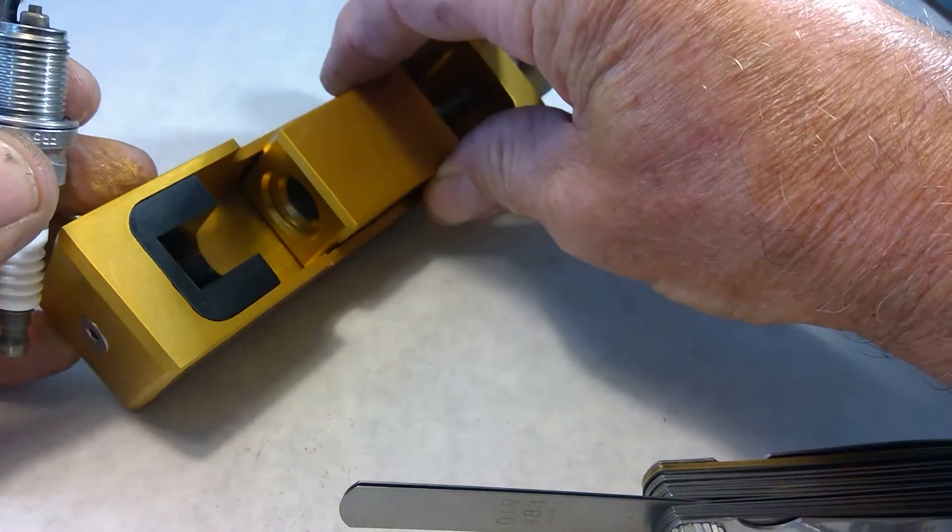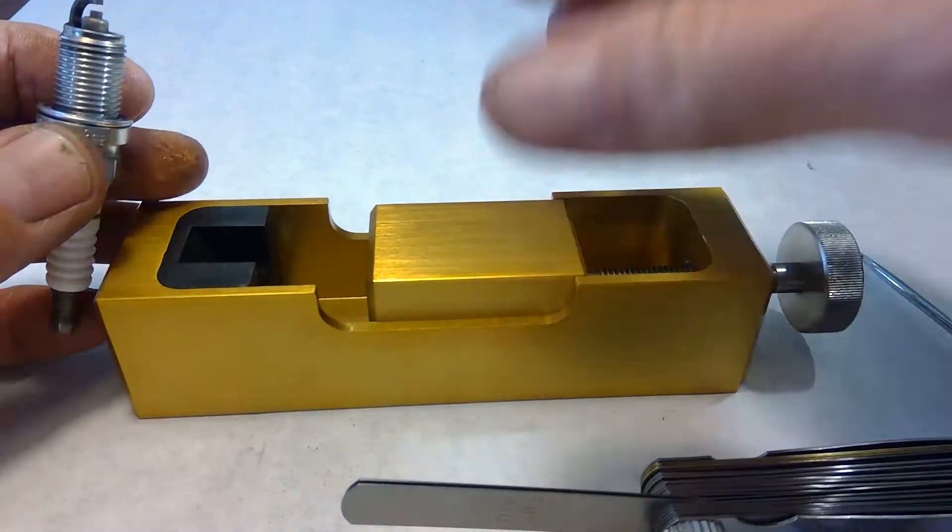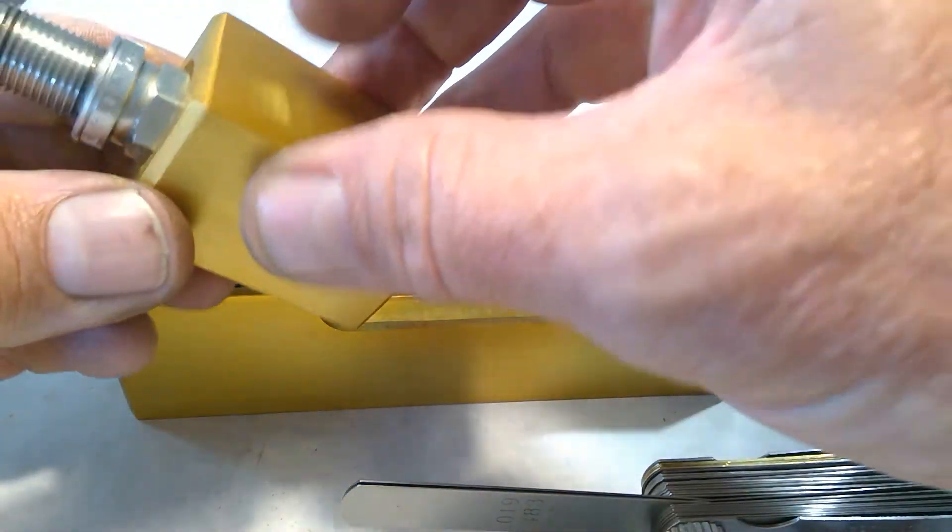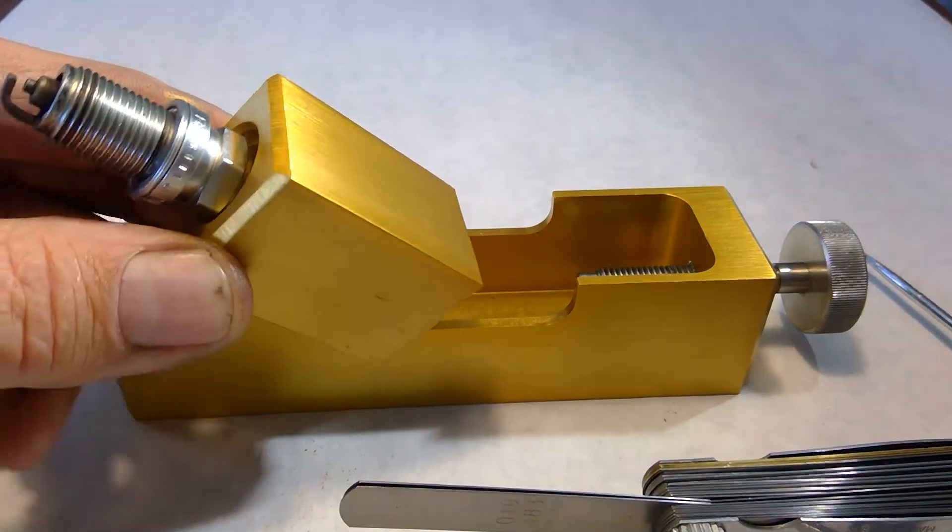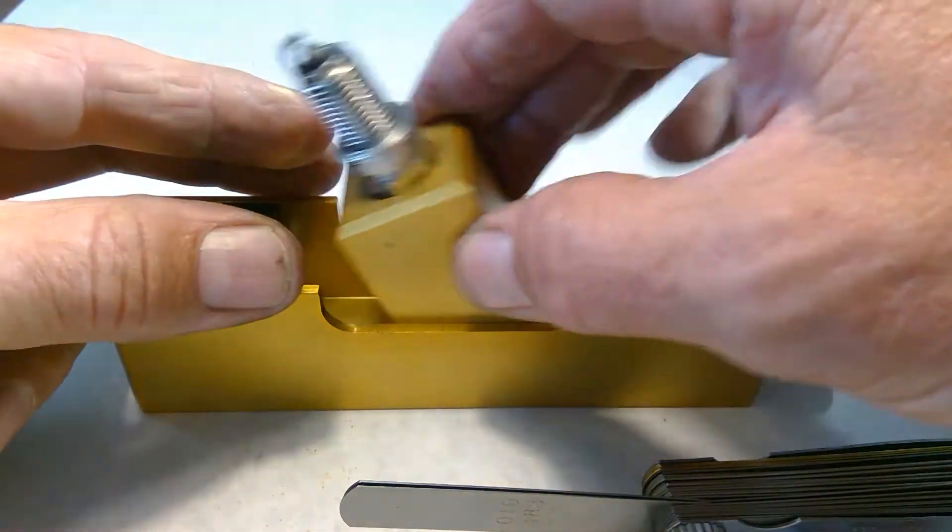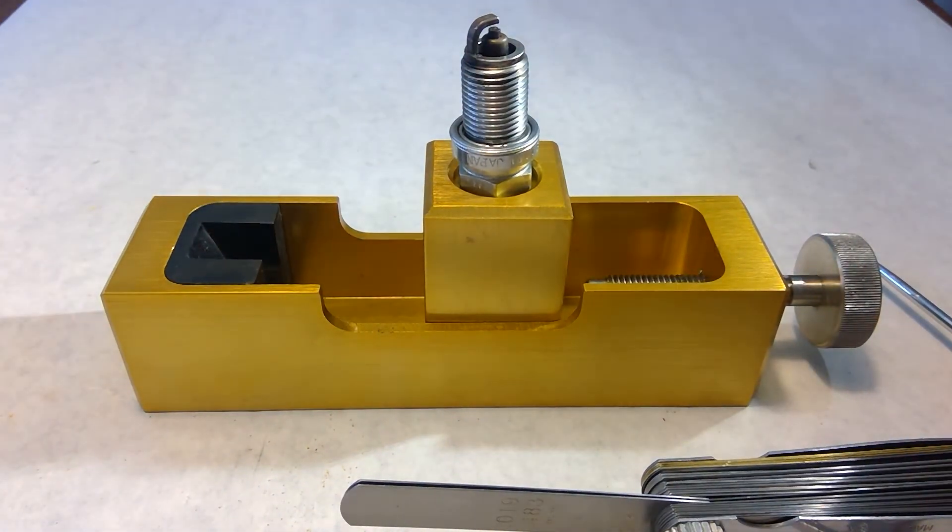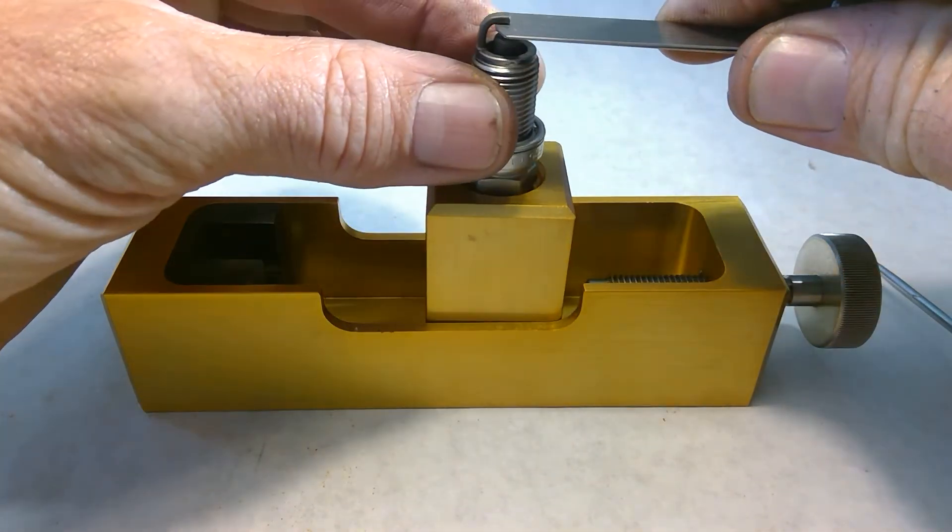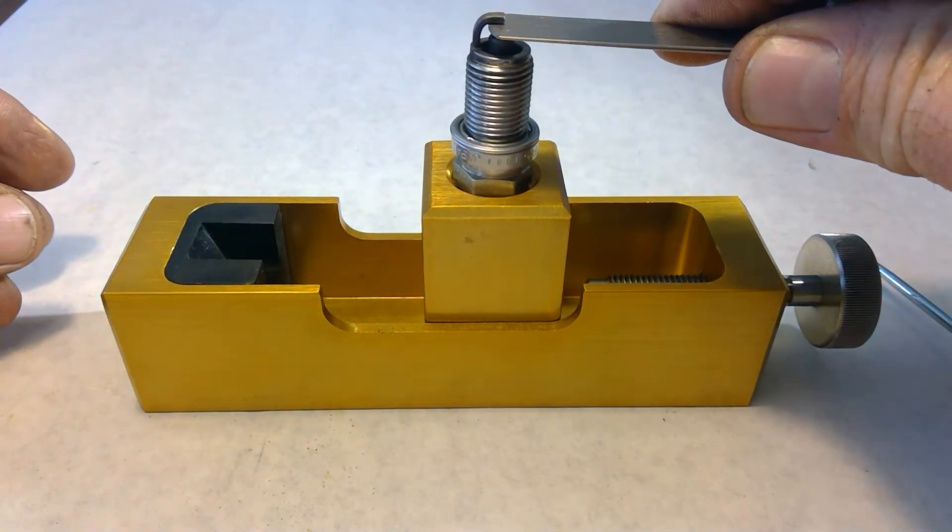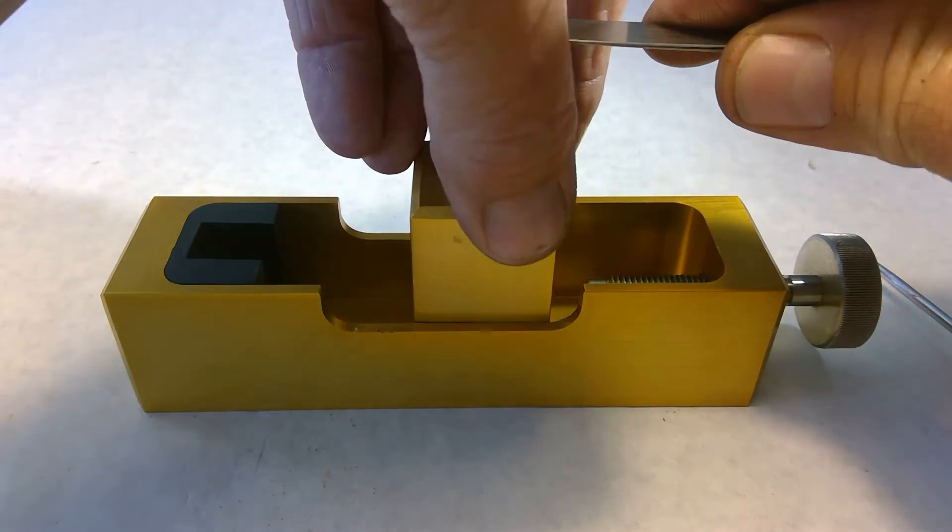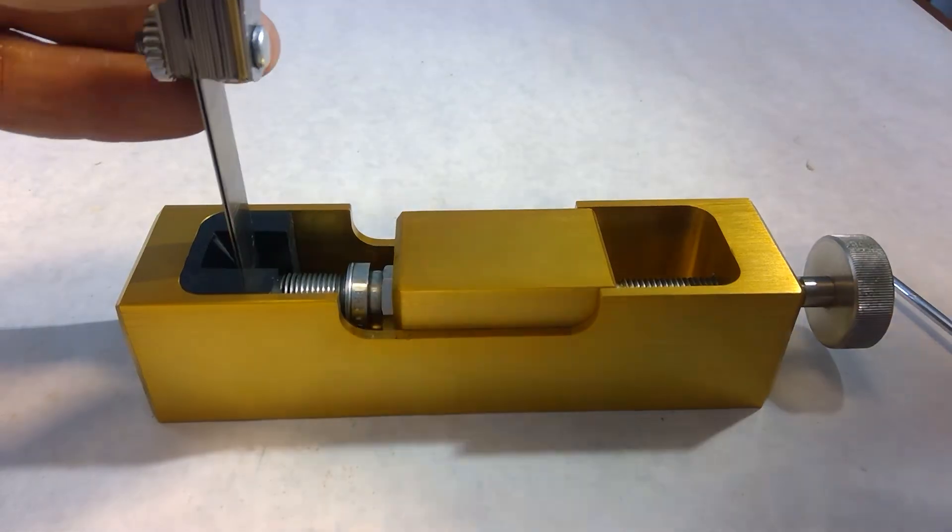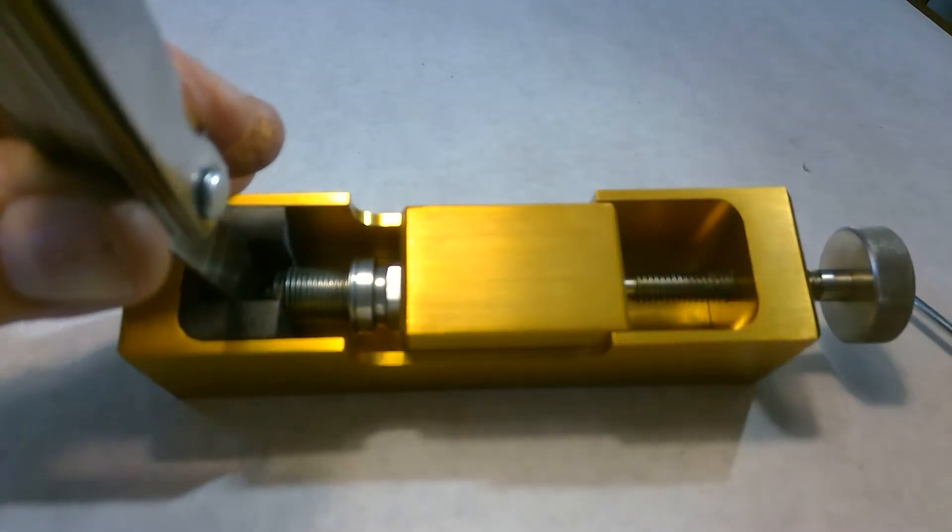Now, this is kind of hard to see in use because of the lighting. But what I'm going to do is take this, I'm going to put the body of the spark plug into that block. Then what I'm going to do is take my feeler gauges set to whatever it is that I want, and I'm going to put them into the gap. I'm going to take this whole thing and set it down into this tool like that.